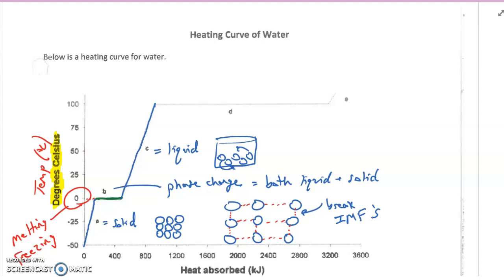After liquid, we get to the next phase change. This is letter D up at the top here. This is the transition between a liquid and then a gas, which is letter E up in the top right corner here.